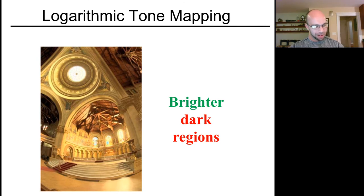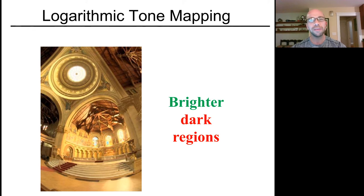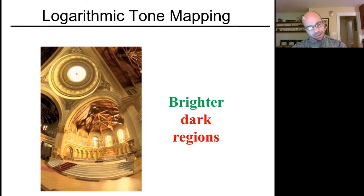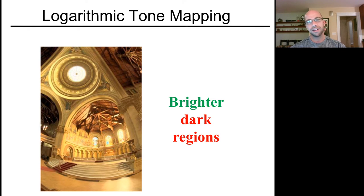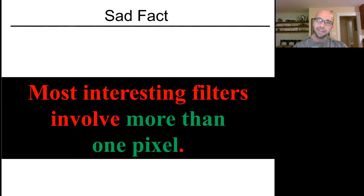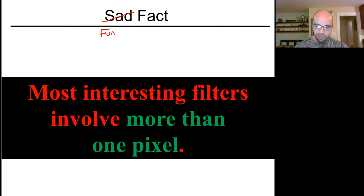Real-world tone mapping algorithms get much more complicated, but the basic trick is: take the log of your image, rescale that to the displayable dynamic range, then exponentiate. All the filters discussed so far are per-pixel filters — just a giant for-loop over every pixel, doing some editing on pixel colors one by one. But most interesting filters involve more than one pixel at a time.